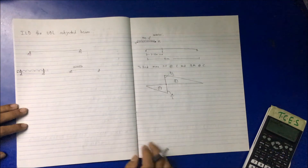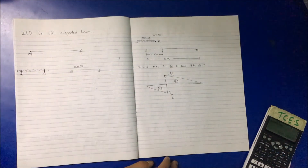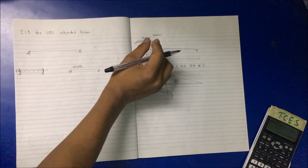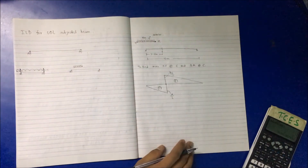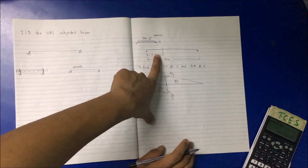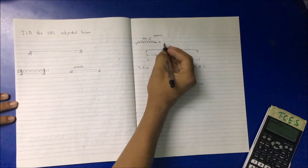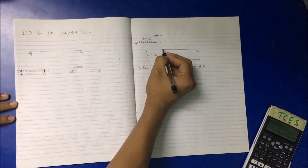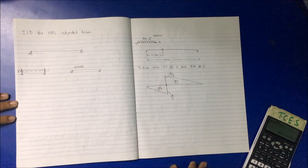The uniformly distributed load is 40 kN/m, 5 meters long, crossing the girder from left to right. The question asks for maximum shear force at 6 meters. When the head just touches point C, maximum negative shear force occurs.